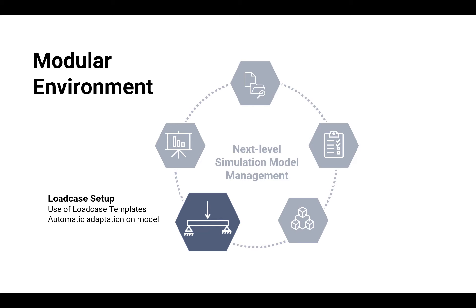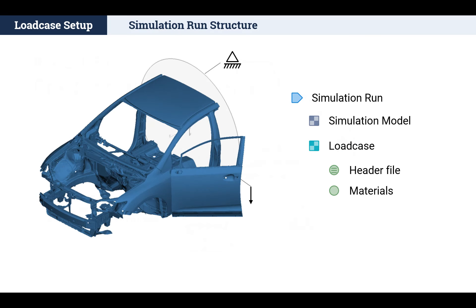In the ANSA Modular Environment, load case setup is made easy with the use of load case templates that are automatically adapted on the model. In the typical simulation run anatomy, the load case consists of load case-specific library items like the header file, control cards, barriers and crash dummies, and sometimes load case-specific subsystems like the cavity in NVH models. This modular composition of the load case enables the reuse of library items and subsystems between different iterations, load cases, and even projects.